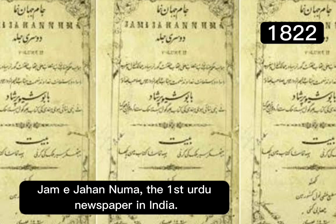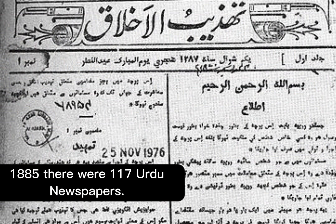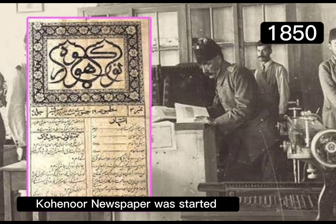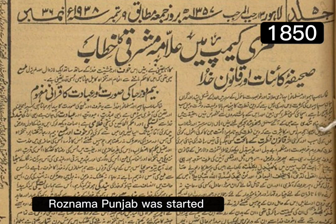The first Urdu newspaper, Jami Jahanuma, was published from Calcutta in April 1822. By 1885 there were 117 Urdu newspapers. By the time of independence in 1947, the number of Urdu newspapers had grown to 584 in the country. On the 14th of January 1850, Munshi Harsak Rai started the weekly Koh-Nur, which had a remarkably high circulation of 350 copies. Another important paper founded that year was Rasnam Hi Punjab from Lahore.